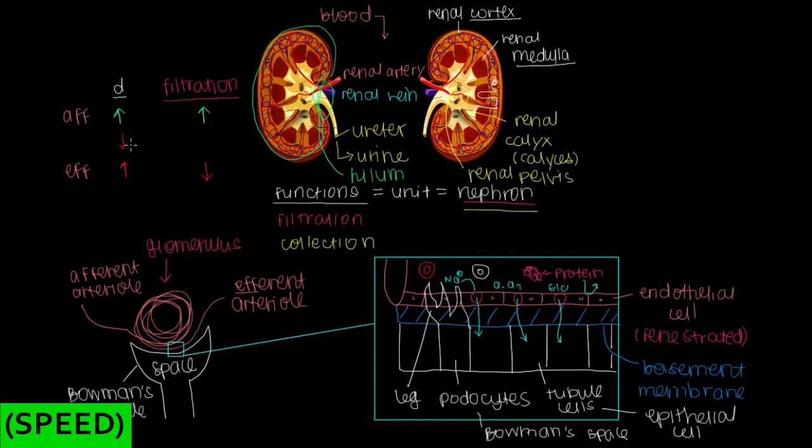The same thing goes if we decrease the diameter of our afferent arteriole. If we decrease the amount of blood that can come into the glomerulus, that means there's going to be less fluid filtered out, so a lower filtration rate. And this is actually what happens with renal artery stenosis. If we have a very narrow or stenosed vessel, that means there's going to be less blood that runs across our fenestrations and is filtered away.